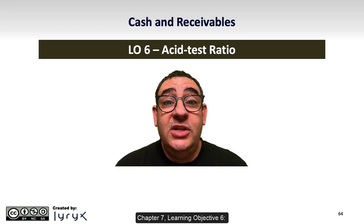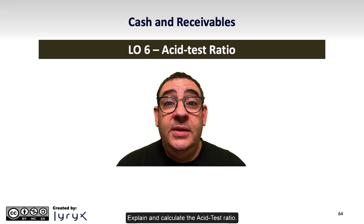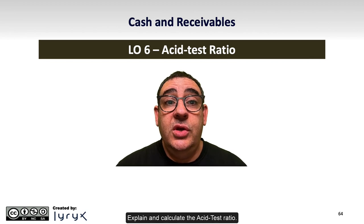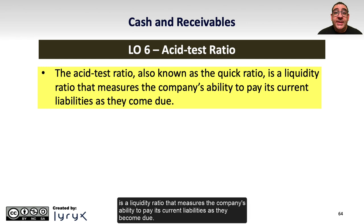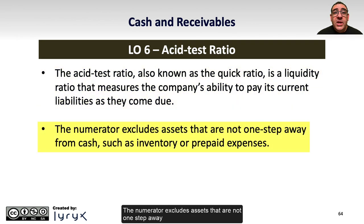Chapter 7, Learning Objective 6: Explain and Calculate the ACID Test Ratio. The ACID Test Ratio, also known as the Quick Ratio, is a liquidity ratio that measures the company's ability to pay its current liabilities as they become due. The numerator excludes assets that are not one step away from cash, such as inventory or prepaid expenses.